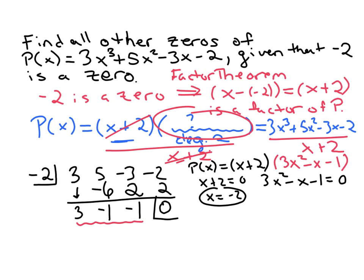If we were going to factor it, we would want two numbers whose product is three times negative one. So the product is negative three, and the sum is negative one. There's no two such whole numbers that are going to do that. So we'd have to use the quadratic formula to solve this quadratic equation.